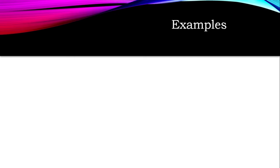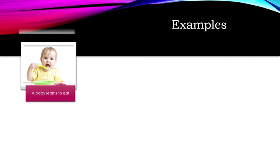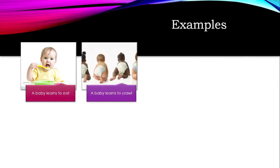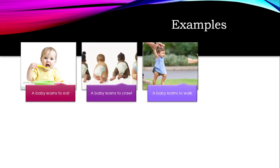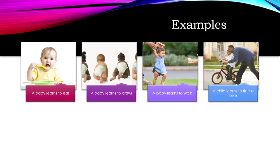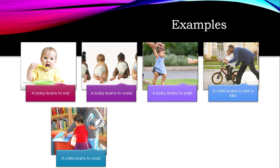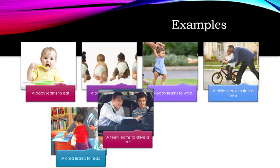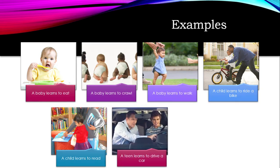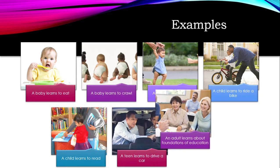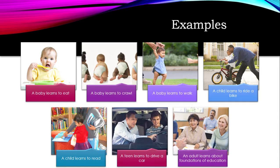Some examples include when a baby learns to eat, crawl, or walk; when a child learns to ride a bike with help; when a child learns to read; when a teenager learns to drive a car; and like us, when adults learn about foundations of education. All of those are examples of people using social interaction to learn within the Zone of Proximal Development.